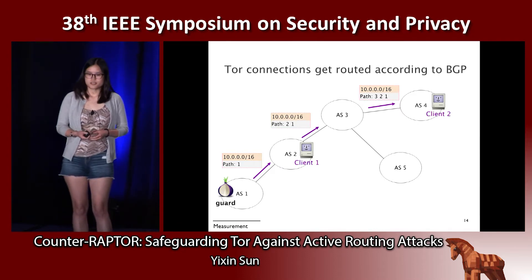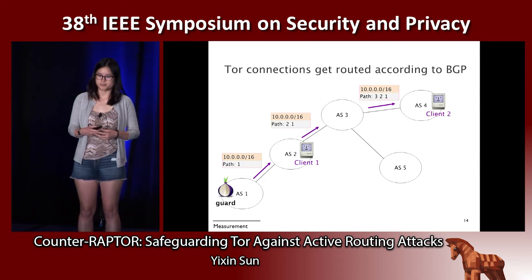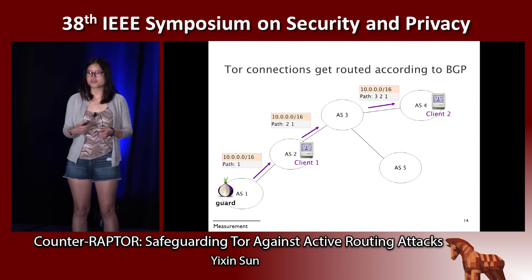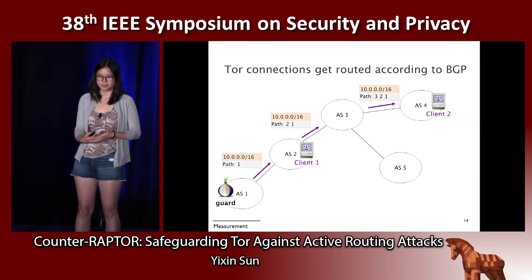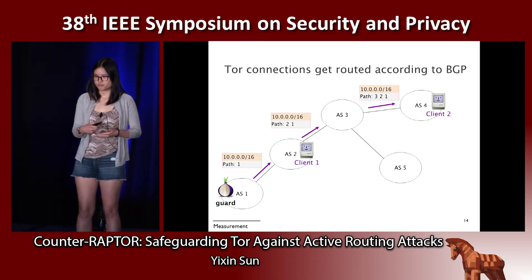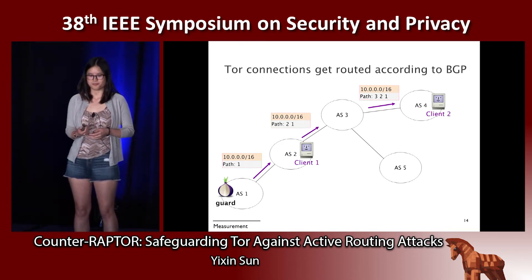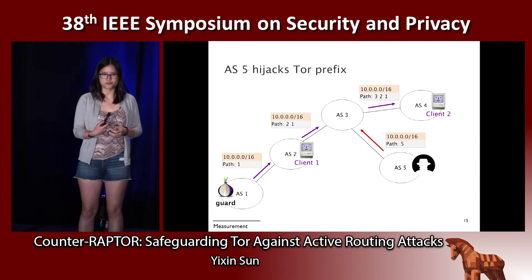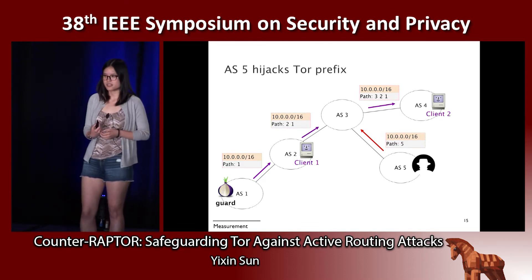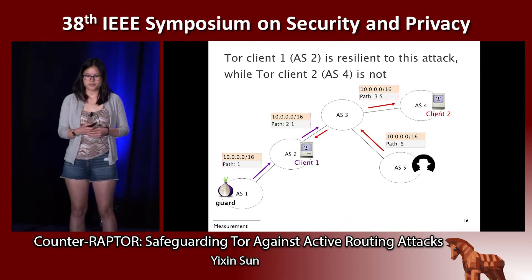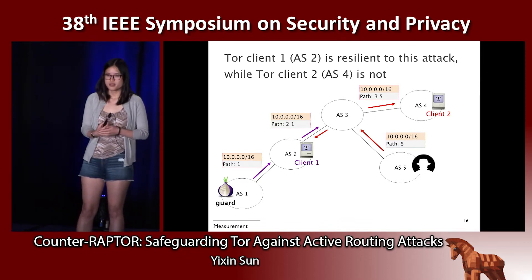Tor connections get routed according to BGP. In this simple AS topology, Tor client 1 is in AS2 and Tor client 2 is in AS4, and they both use the same guard relay in AS1. AS1 is announcing the slash-16 prefix, and traffic gets routed to the guard relay based on this routing announcement. The malicious AS5 wants to hijack this traffic by announcing the same slash-16 prefix to its neighbor AS3, which then propagates the announcement to more neighbors including AS4.